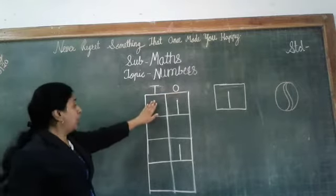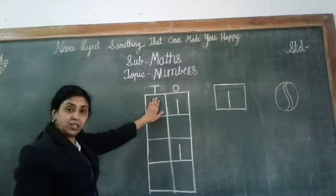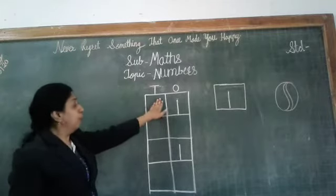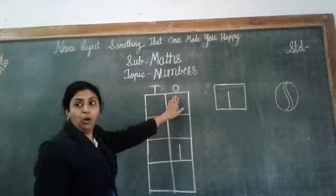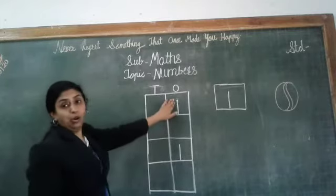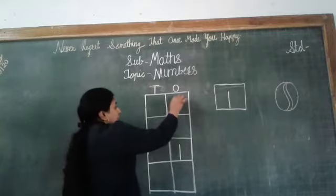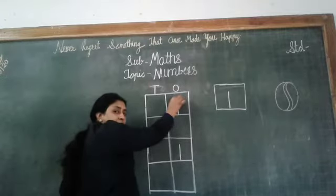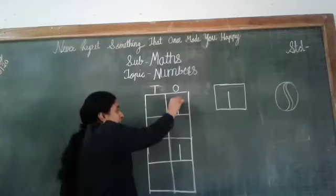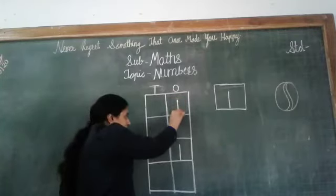We should not write it in the place of T. We have to start from O. Look here how to write number 1. Now put your pencil in the middle of your square and start a standing line.